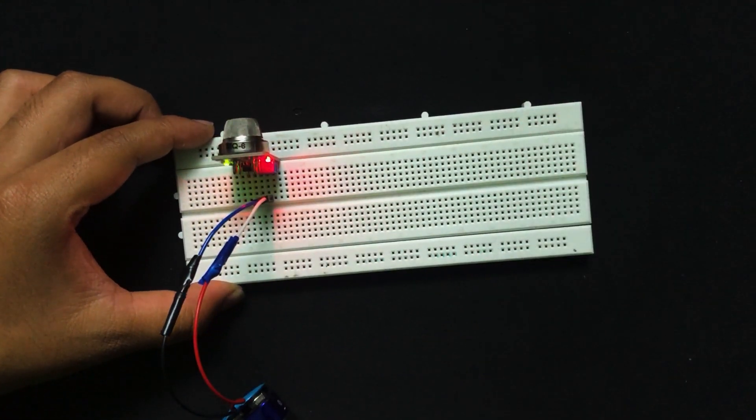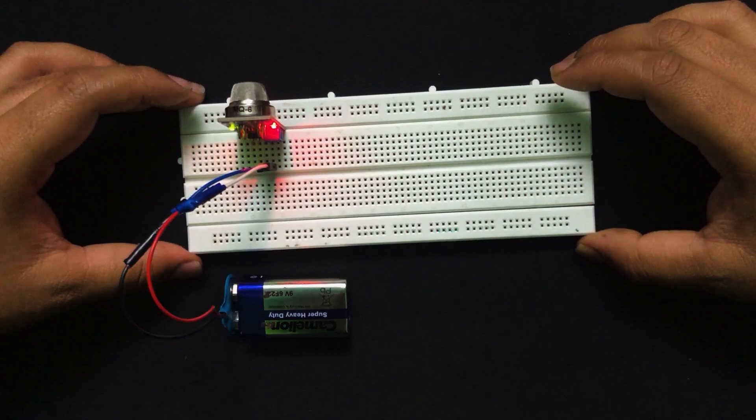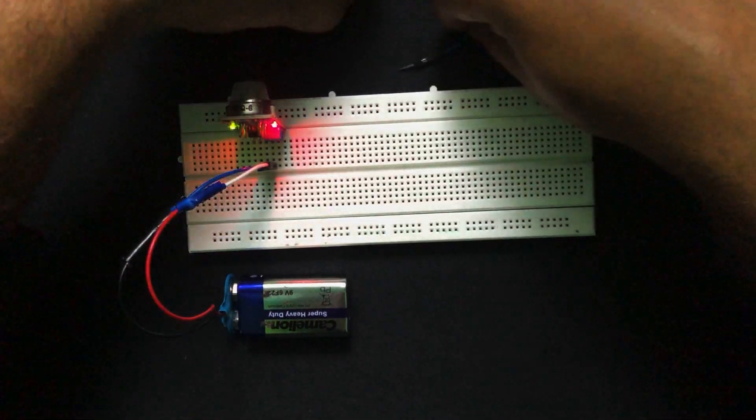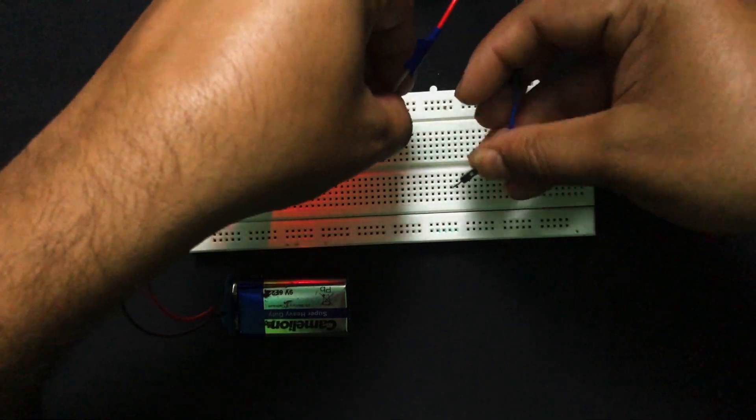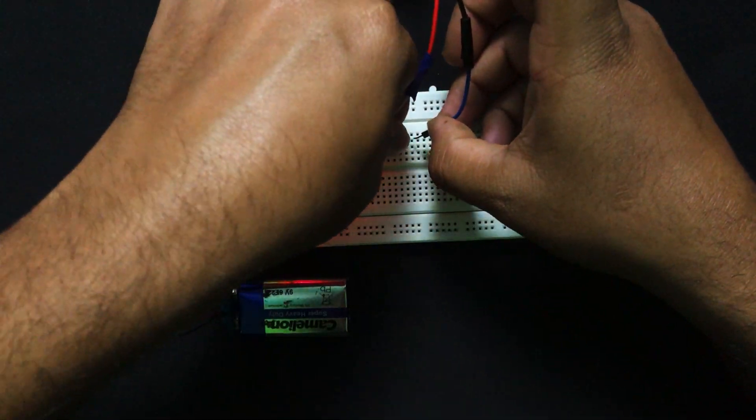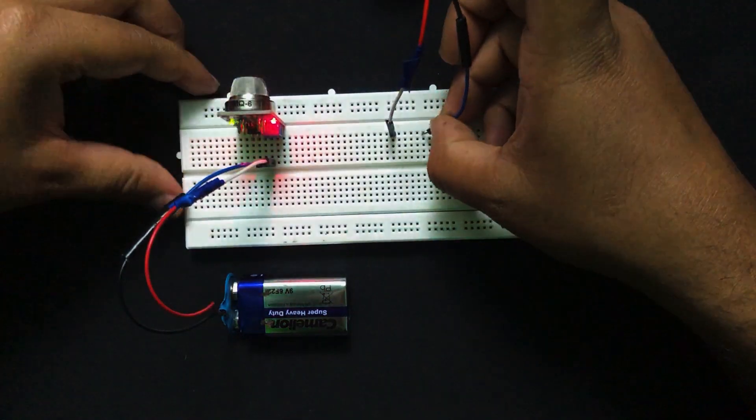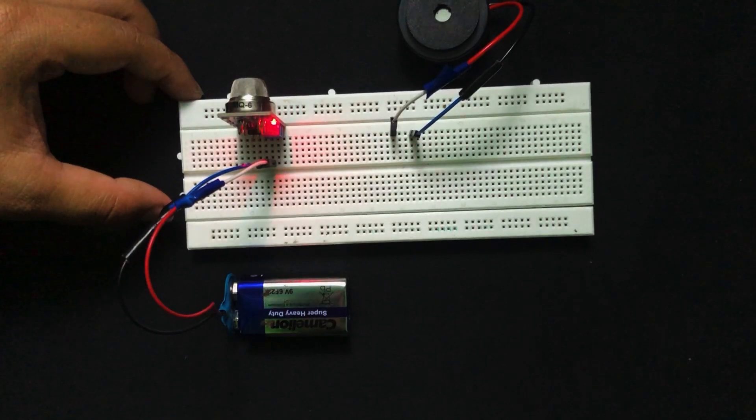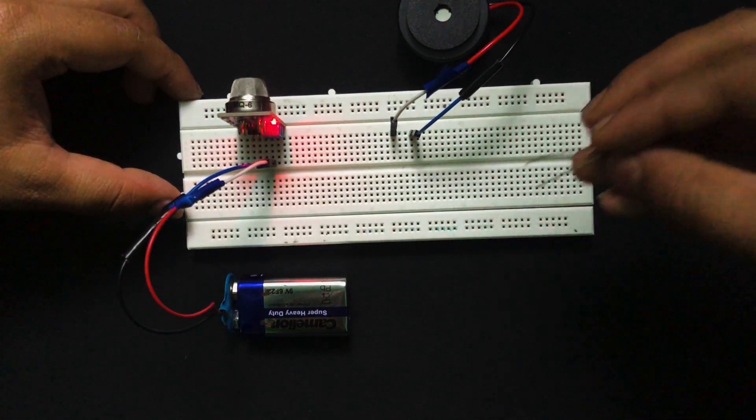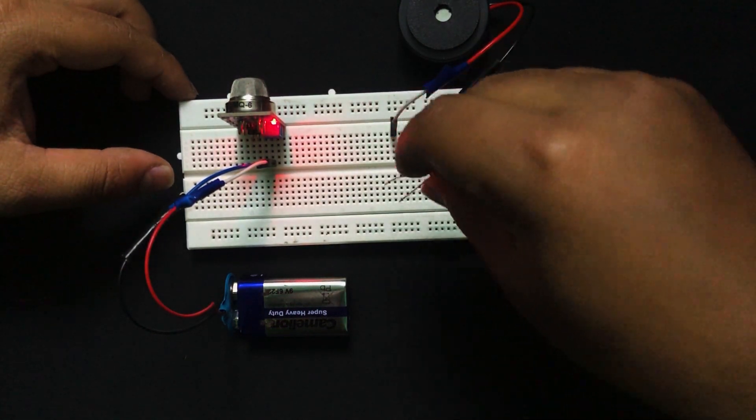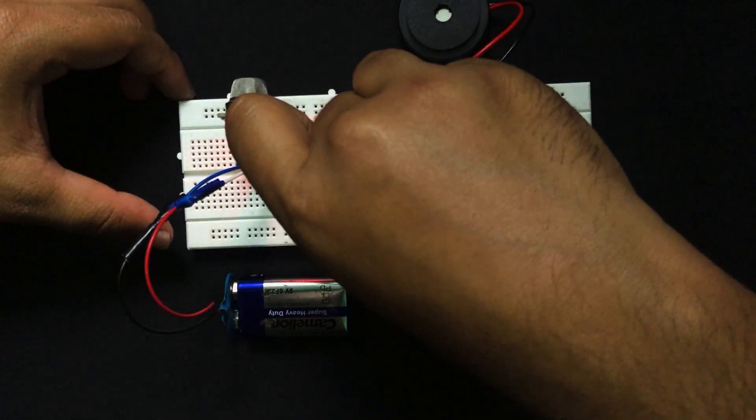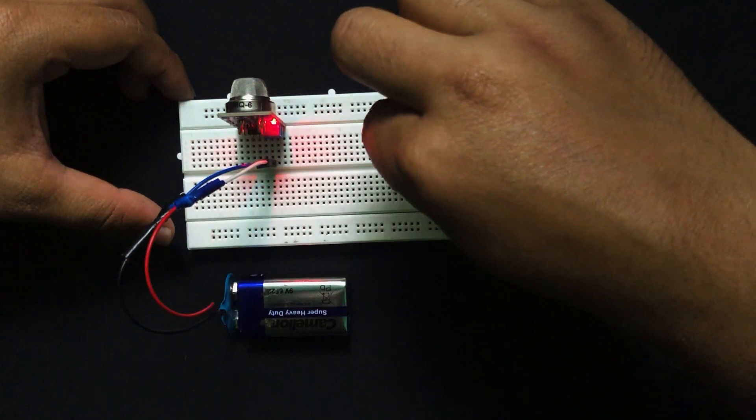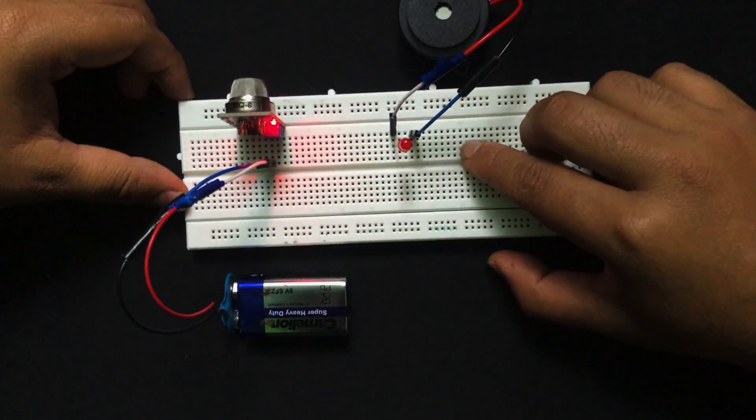Now that we have connected our battery, let us give connections to buzzer and LED. We take our buzzer and at any empty cell I'm going to connect the positive and negative terminals. Then we're going to take our LED. I'll connect the positive terminal to where we have connected the positive terminal of the buzzer, and the negative to the negative terminal of the buzzer.